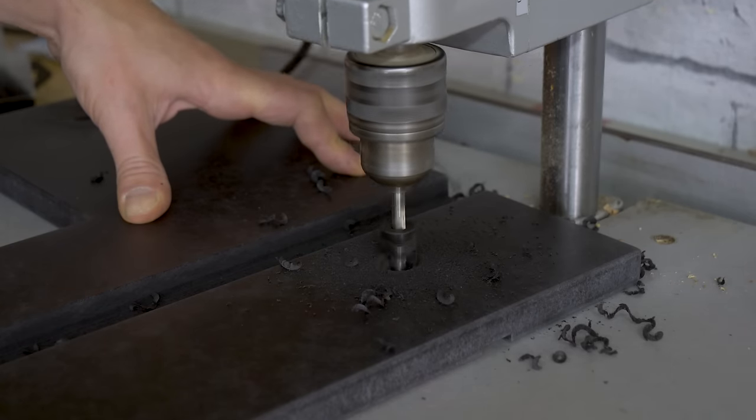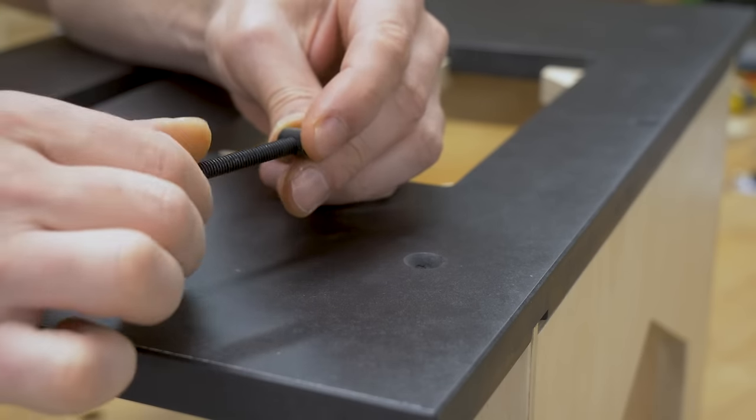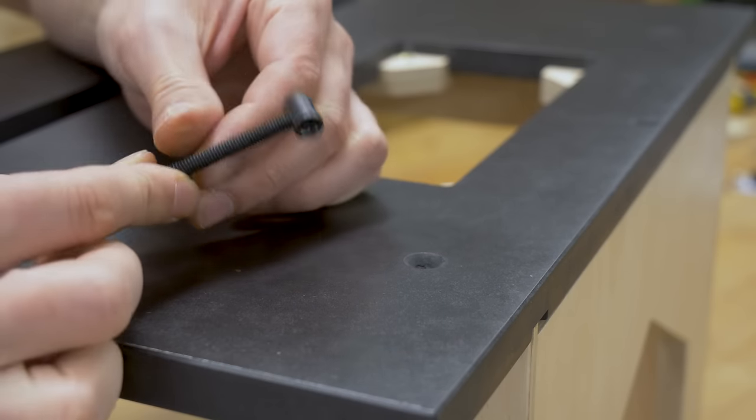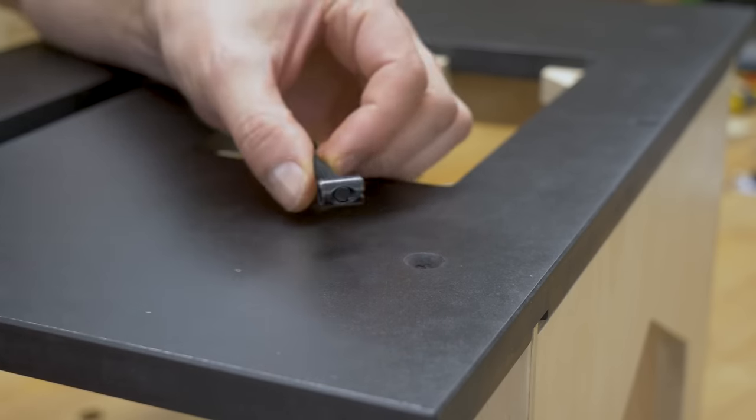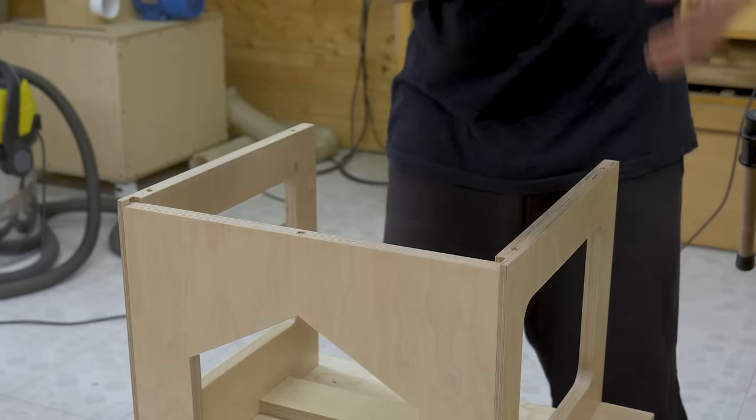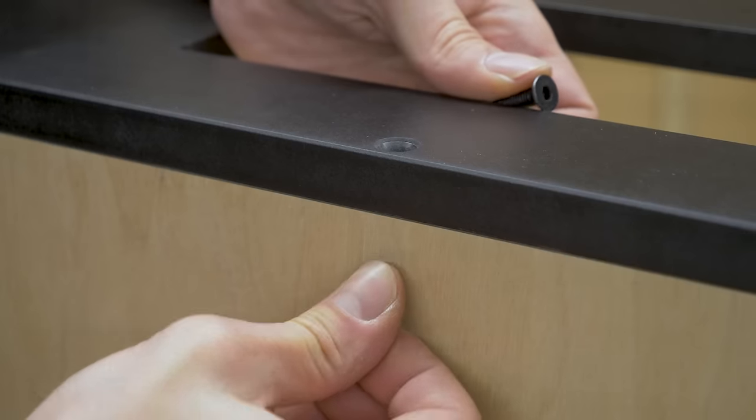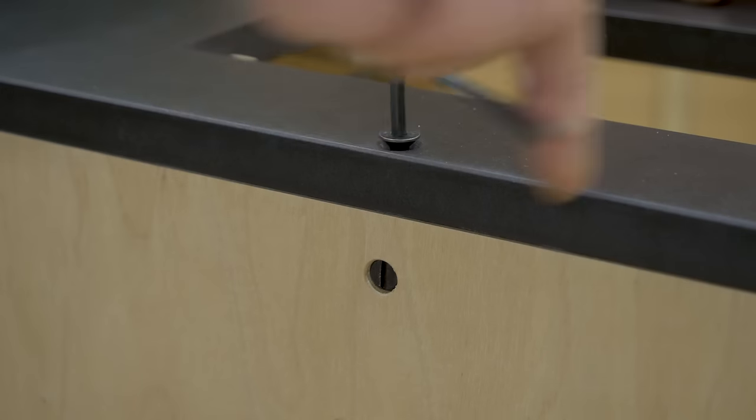Now I'm going to drill the required holes for the bolts and barrel nuts. This step is better done before gluing any parts of the cabinets together, but now I have no choice but to use this system because it's something I've decided along the way.